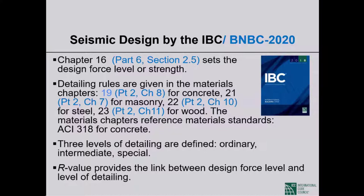For concrete it is Part 2 Chapter 8 of BNBC 2020; Chapter 21 of the IBC for masonry is Part 2 Chapter 7; Chapter 22 for steel is Part 2 Chapter 10; Chapter 23 for wood is Part 2 Chapter 11 of BNBC 2020. The materials chapter references material standards; for concrete the standard is ACI 318. Three levels of detailing are defined: ordinary, intermediate, and special.